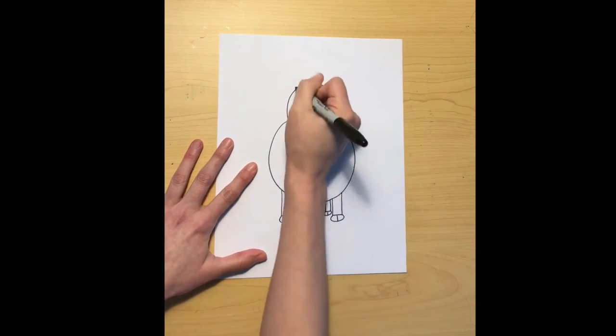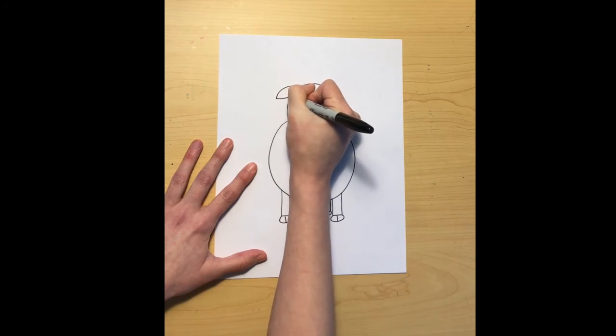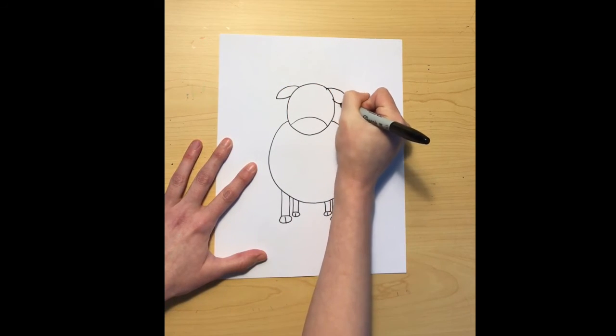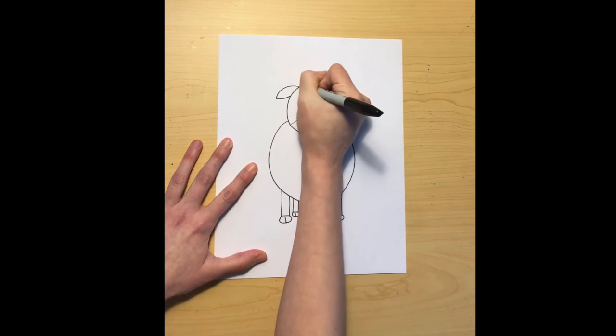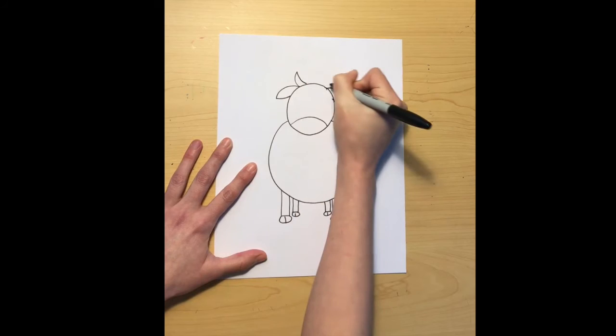Now it's time for some ears. On our rectangle cow I made the ears going up. On this one I want them kind of pointing down. It'll give your face a little bit of a different expression. And don't forget those curvy lines for the horns.